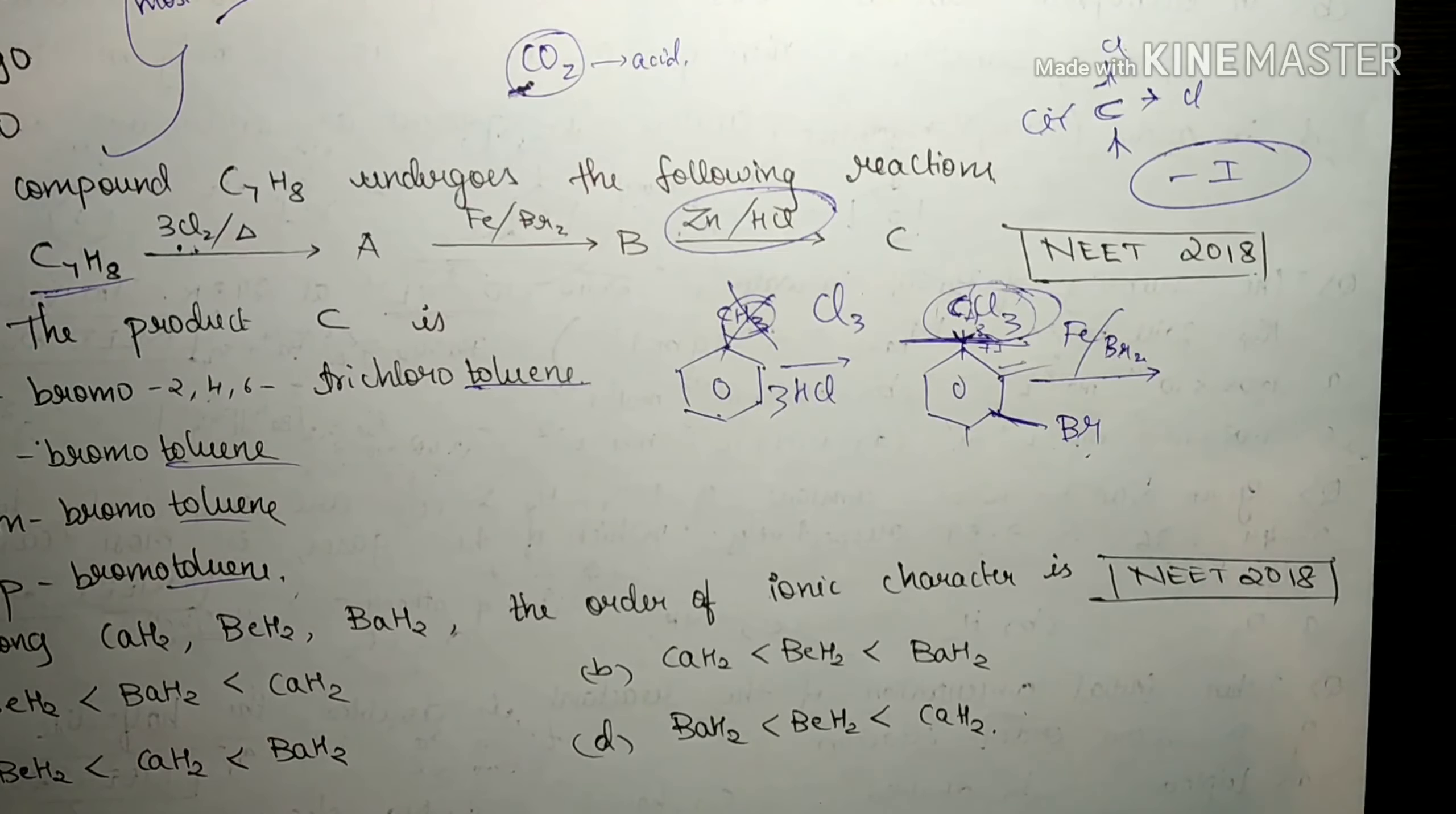And finally, we are making it to react with Zn and HCl. You know that it brings about reduction reaction. And all these three Cl will again be replaced by hydrogens. In this case, all the hydrogens will replace chlorine. And then finally we get the compound CH3 and Br at the meta position. So meta bromo toluene should be our correct answer.